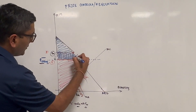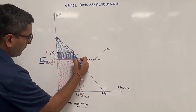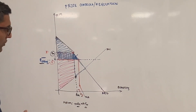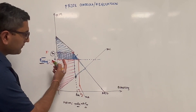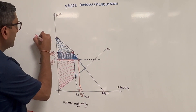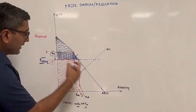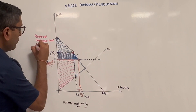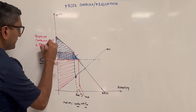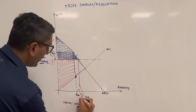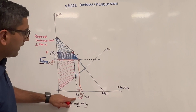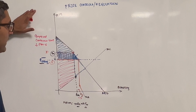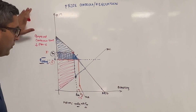We also see that some deadweight loss — which was originally dead weight — is now reclaimed by consumer surplus. So adding a price ceiling actually improved consumer surplus in this case. It reduced producer surplus, and we also see an increase in quantity. That is how price regulation or price control can help.